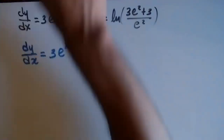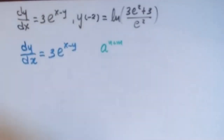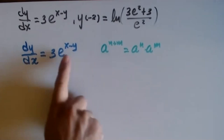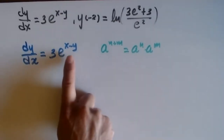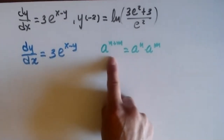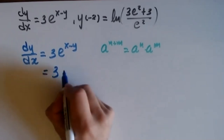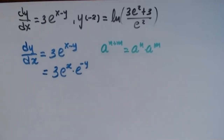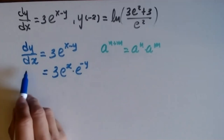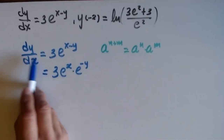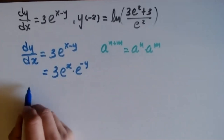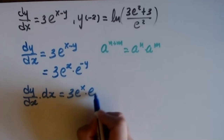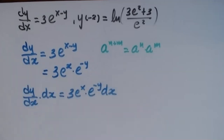I need to remember my algebra: a^(n+m) = a^n · a^m. I'll use this to split the expression for x and y. So dy/dx equals 3e^x · e^(−y). Then I multiply everything by dx — I need to cancel this dx from this side — so I get dy/dx · dx equals 3e^x · e^(−y) dx.